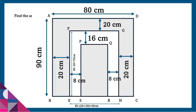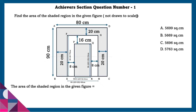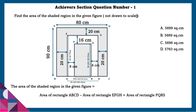Now let us find the area of the smaller shaded part. SR is equal to 80 minus 2 into 20 plus 8, which is equal to 24 centimeters. RQ is equal to 90 minus 20 plus 16, which is equal to 54 centimeters. Now we got the length and breadth of the inside shaded region and outside unshaded region. Area of rectangle ABCD minus area of rectangle EFGH plus area of rectangle PQRS is equal to 5696 square centimeters. So this would be the final shaded region.